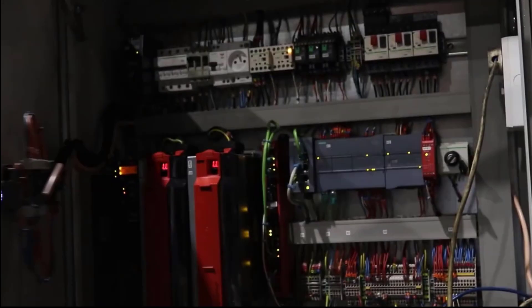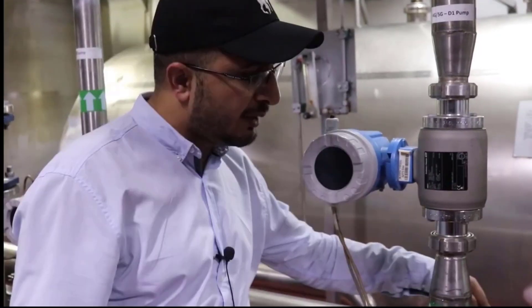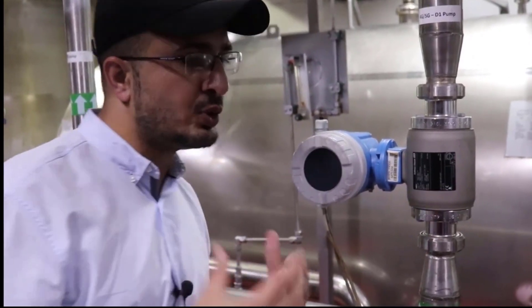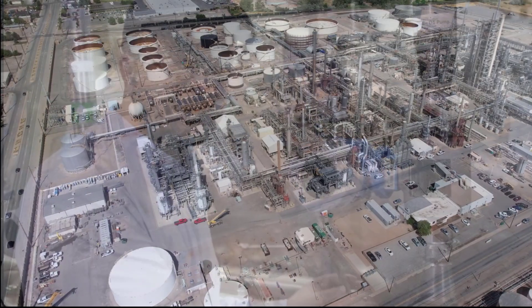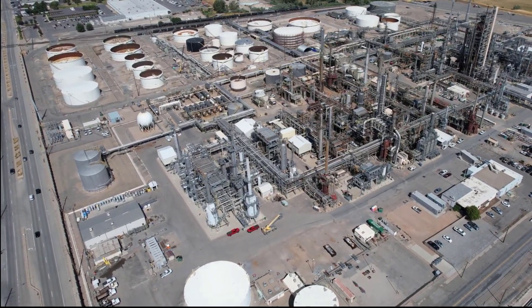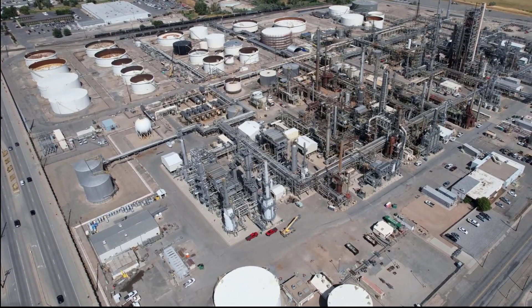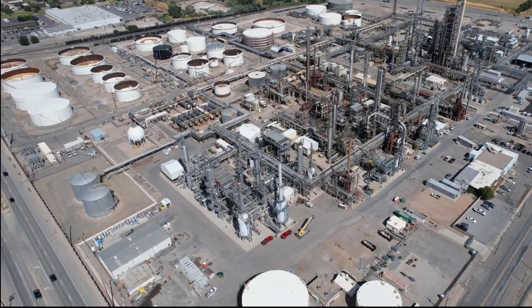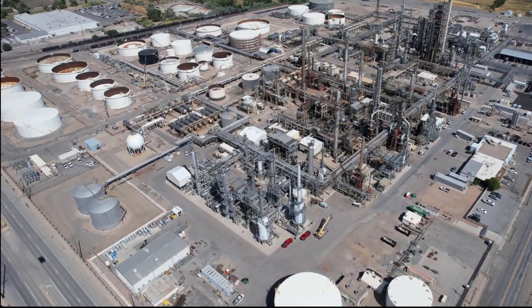Step 8: Stay updated. Stay current with the rapidly evolving field of industrial automation. Keep up with industry trends, new technologies, and advancements, as automation technology is continually evolving. Regularly follow relevant blogs, forums, and industry publications to stay informed.